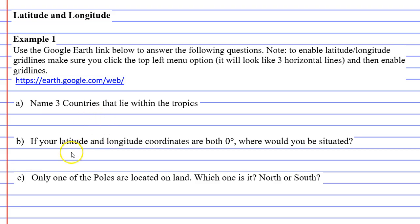So all you really need to do is just write ocean here. Let's write ocean. Okay. Now question C says only one of the poles are located on land. Which one is it, north or south?